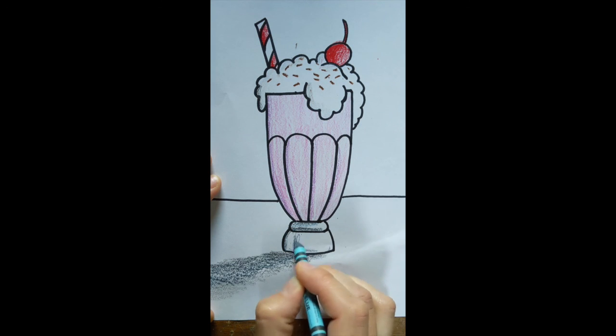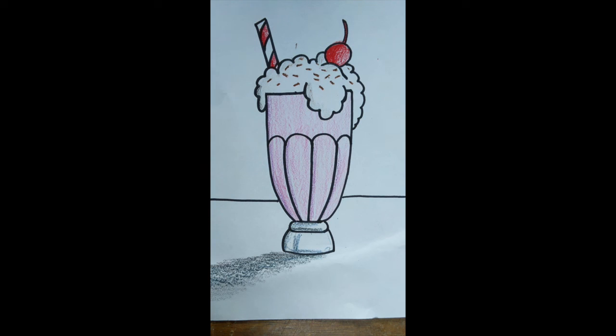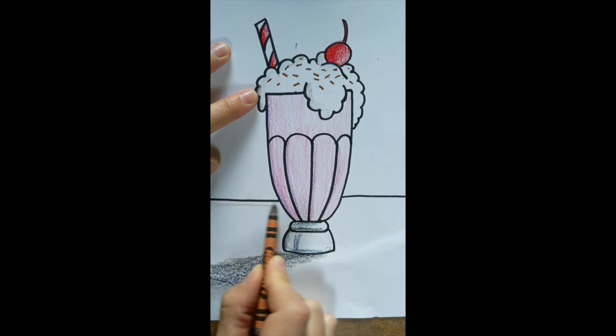And then I'm going to go ahead and just color the rest of my table here. And I'm just going to use brown to color my table. But your table can be whatever color you want. And then if you want to add anything else in your background, you can add something else in your background.